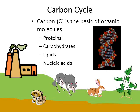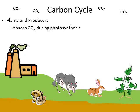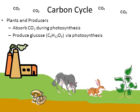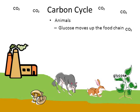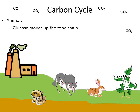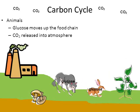In the carbon cycle, plants and producers absorb carbon dioxide as a reactant for photosynthesis. Through photosynthesis, autotrophs produce glucose, which is carbon-based. Then the carbon moves up the food chain — the plant made glucose, the rabbit eats the plant, the wolf eats the rabbit. Animals perform cellular respiration and as a result release carbon dioxide back into the environment.